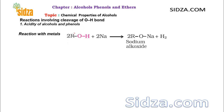Hello friends, welcome to sitzoh.com. Now we will discuss some of the chemical properties of alcohols. We know alcohols have a general formula of ROH. In our last video we learned that alcohols have some acidic nature, because this hydrogen can be lost by the alcohols and they can form alkoxide ions, giving them acidic character.